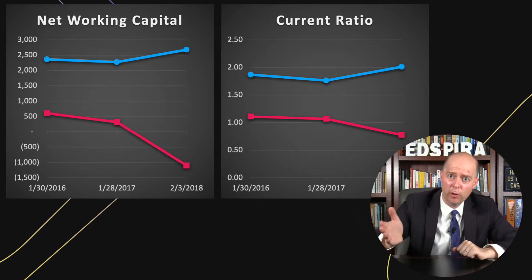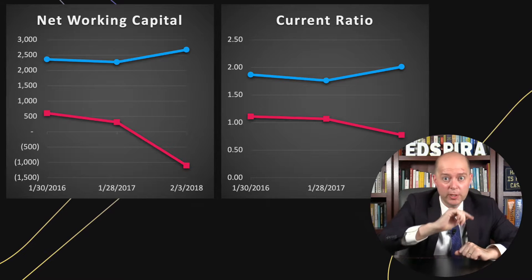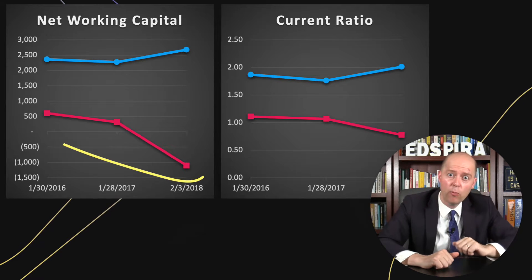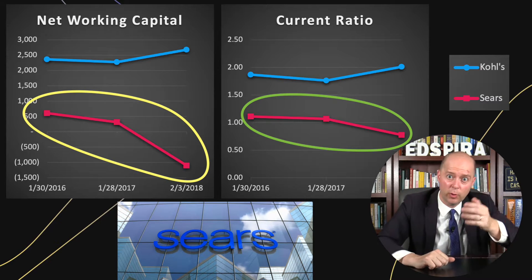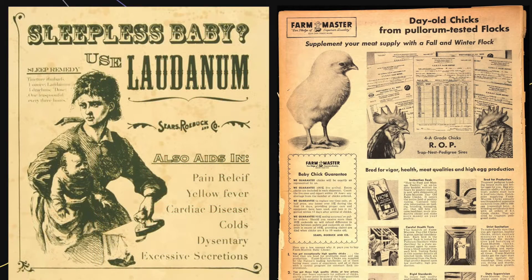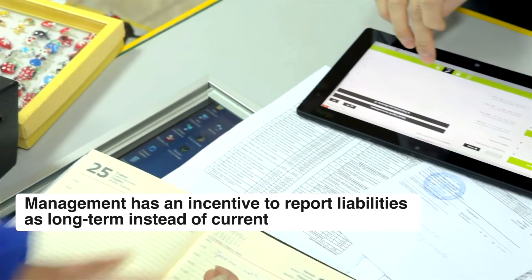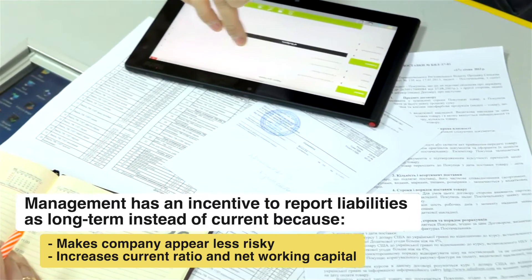For example, take a look at the net working capital and current ratios for these two retailers over the same three-year period. One of these retailers had serious problems paying its bills in 2018 — it was the one with the declining net working capital and current ratio. That company was Sears Holdings, which filed for bankruptcy in October of 2018. Finally, note that a company's management has an incentive to report liabilities as long-term instead of current, as this makes the company appear less risky and increases the current ratio and net working capital, which are often referenced in loan covenants. Keep this in mind when you're analyzing a company's balance sheet.